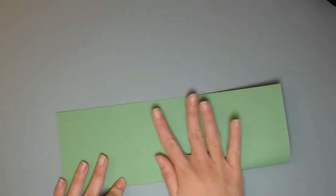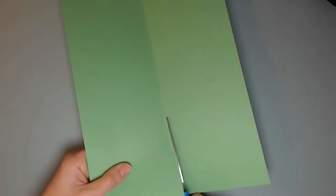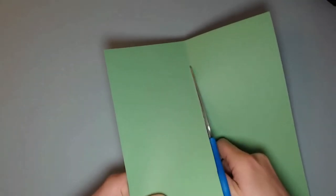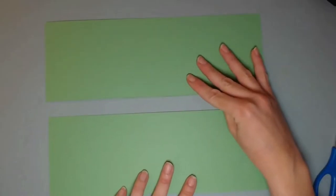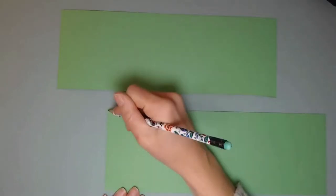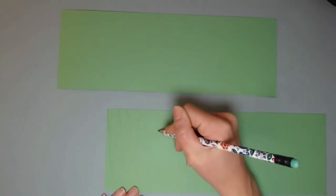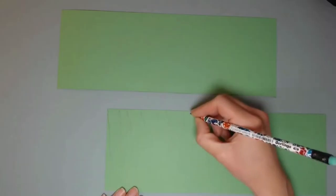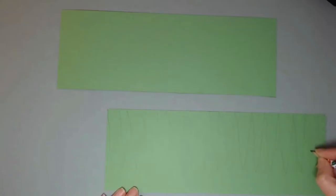And next we'll be needing our green paper. Fold it in half and cut it down the middle. Now you'll be drawing blades of grass with your pencil. This may take some time so you can pause the video. The grass doesn't have to be exactly even.